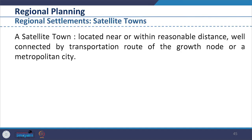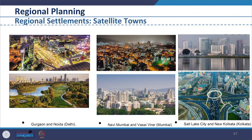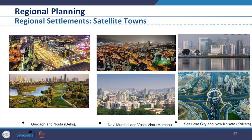A satellite town is one which is located near or within reasonable distance, well connected by transportation routes, of the growth node or metropolitan city. For example, Gurgaon and Noida linked with Delhi; Navi Mumbai and Vasai Virar linked with Mumbai; Salt Lake City and New Kolkata linked with Kolkata. Satellite towns are dependent on the growth node largely for employment, but if developed well, they offer great scope for providing economic growth and employment for the benefit of the main city, provided they are efficiently connected.